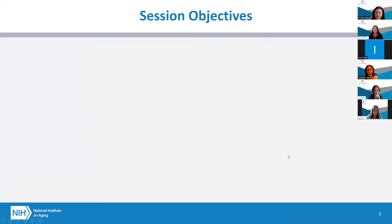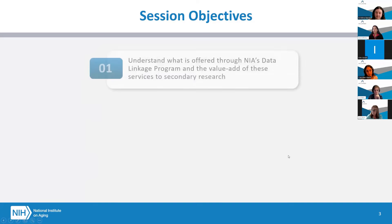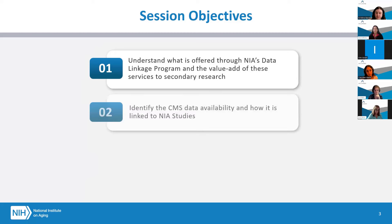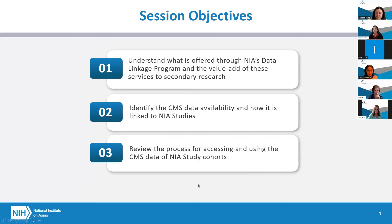The objectives of the session today are to understand what is offered through NIA's Data Linkage Program and the value-add of these services to secondary research, to identify the CMS data available and how it is linked to the NIA studies, and to review the process for accessing and using the CMS data of the NIA study cohorts.